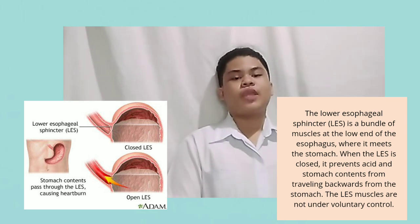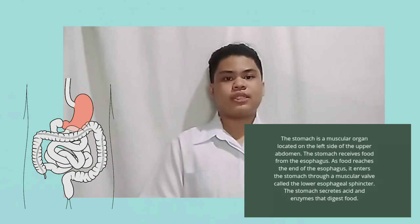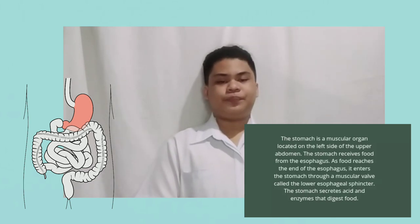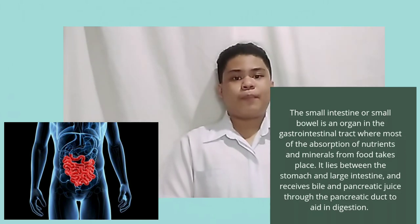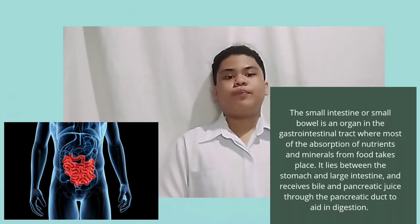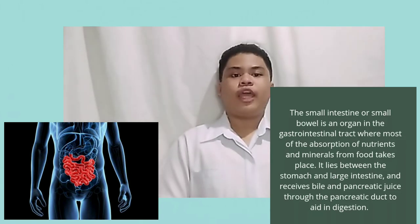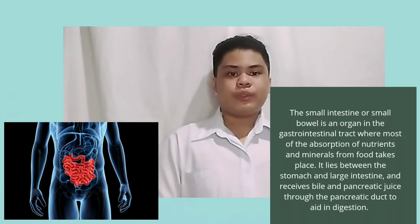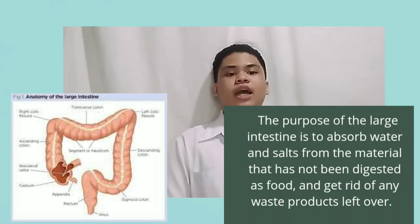In the stomach, the stomach muscles mix food and liquid with digestive juices. The stomach slowly empties its contents, called chyme, into the small intestine. The muscles of the small intestine mix food with digestive juices from the pancreas, liver, and intestine, and push the mixture forward for further digestion. The walls of the small intestine absorb water and digested nutrients into your bloodstream.